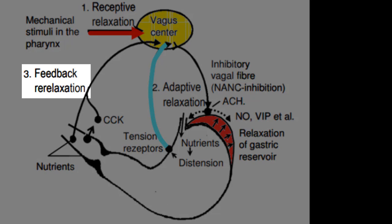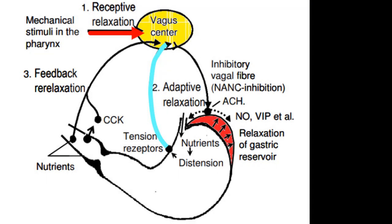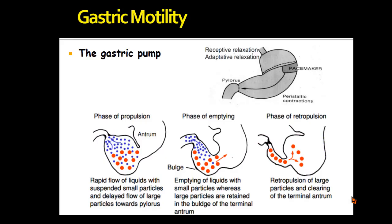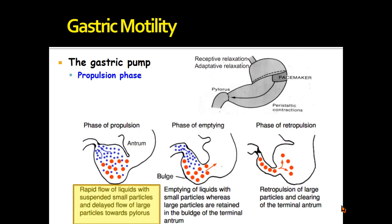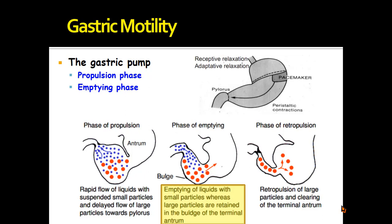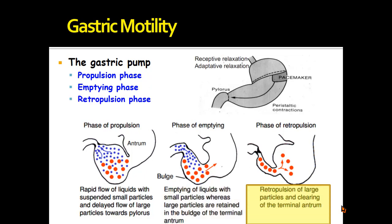The third mechanism is the feedback relaxation mechanism, which occurs when food reaches the duodenum, triggering vagal-vagal stimulation and further relaxation of the oral part of the stomach. For the caudal part — the gastric pump — there are three phases. The first is the propulsion phase: rapid flow of liquids with suspended small particles, and delayed flow of large particles toward the pylorus. The second is the emptying phase: emptying of liquids with small particles, while large particles are retained in the terminal antrum. The final phase is the retropulsion phase: retropulsion of large particles and clearing of the terminal antrum.